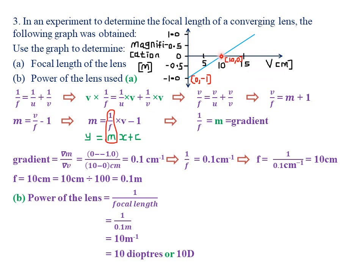Using the points (10, 0) and (0, −1), the change in y is 0 − (−1) = 1, and the change in x is 10 − 0 = 10. So the gradient is 1 ÷ 10 = 0.1 per centimeter.